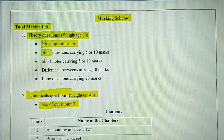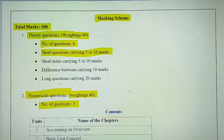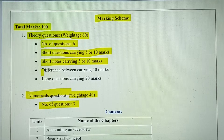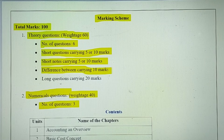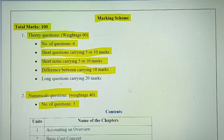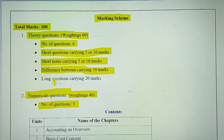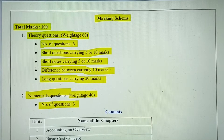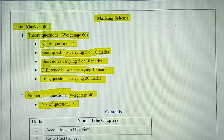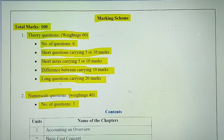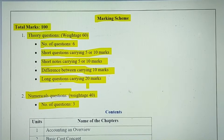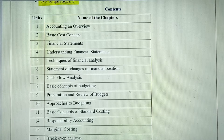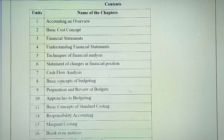Theory questions can include five to ten mark short questions, differences or distinctions — two questions of ten marks each totaling 20 marks — and a long question of 20 marks. For 20 marks you should write nearly 800 to 1200 words. You can divide the number of words proportionally for five mark and ten mark questions. These cover all the chapters in our syllabus.